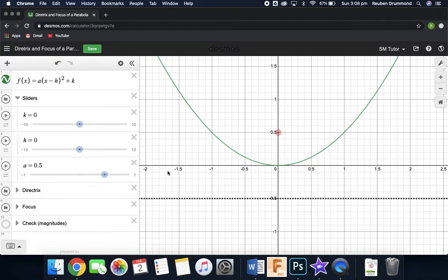Now A, what happens as we increase A? Remember P was equal to 1 over 4A. We found that in the last video, and P is the distance between the vertex and the focus, and the vertex and the directrix. So P is equal to 1 over 4A, so as we increase A, P should decrease, which means the focus should get closer and the directrix should also get closer, because they are inversely proportional, A and P.